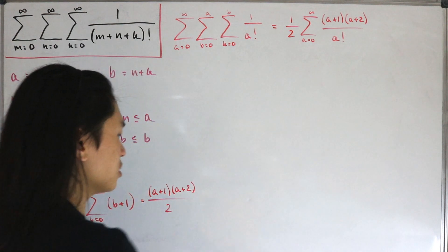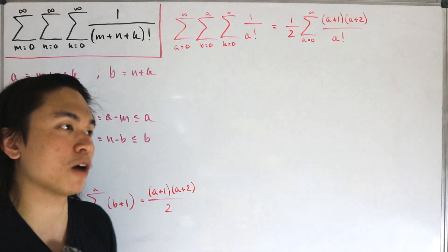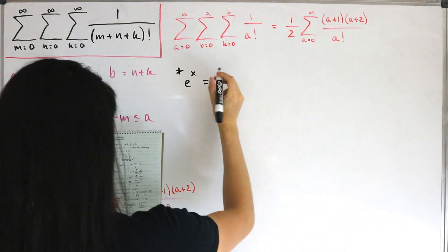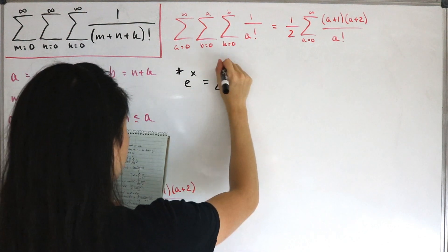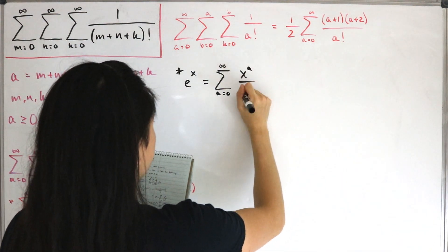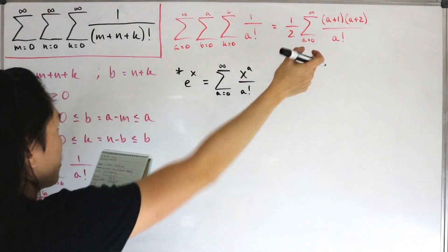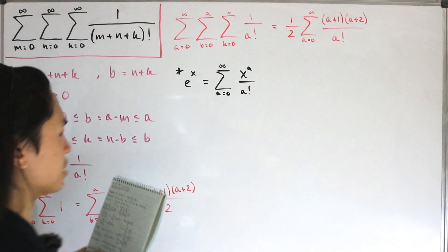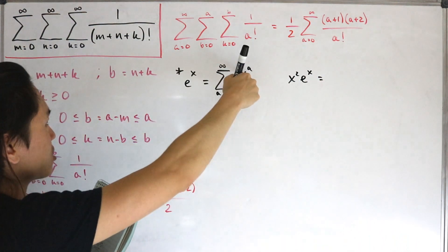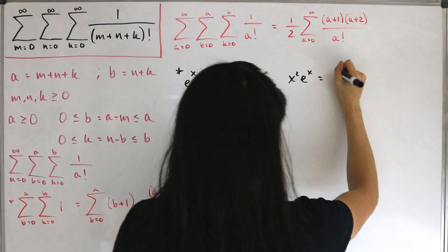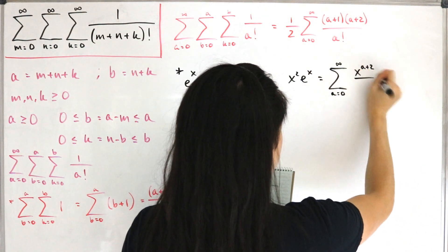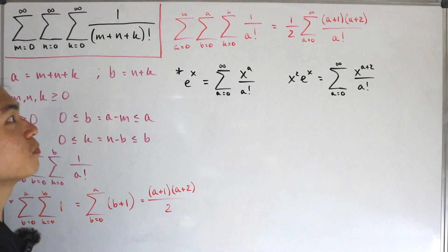To evaluate this, we'll use the Maclaurin series for e^x, written as the infinite sum from a equals zero of x^a divided by a factorial. Multiplying both sides by x squared gives x² · e^x equals the infinite sum from a equals zero of x^(a+2) divided by a factorial.